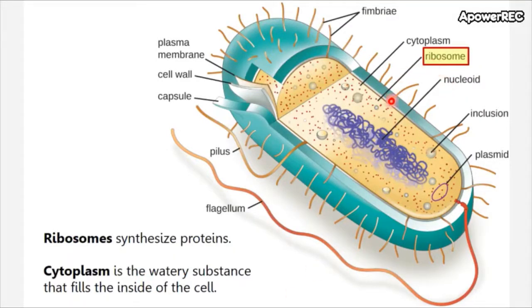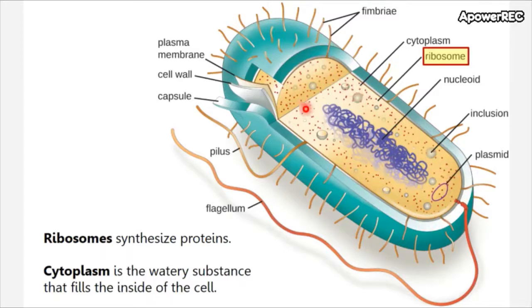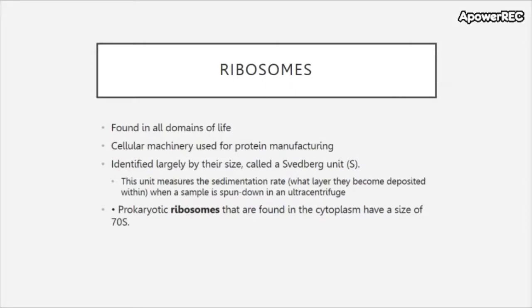Next up are the ribosomes, which are the area where proteins are synthesized. We also have the cytoplasm, which is the watery substance that fills the inside of the cell — it's where all of the other different components float around inside. Ribosomes are found in all domains of life and are cellular machinery used for protein manufacturing.